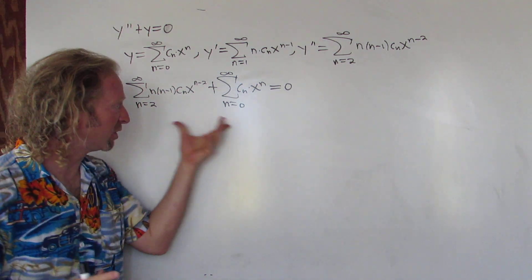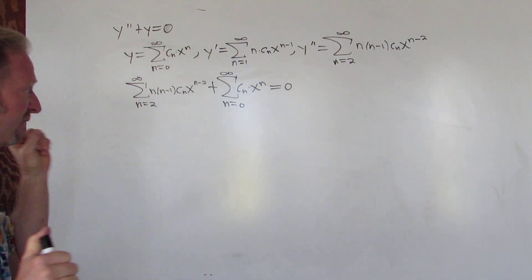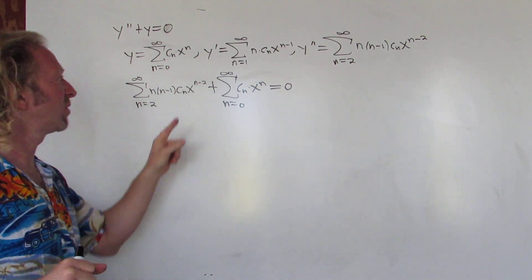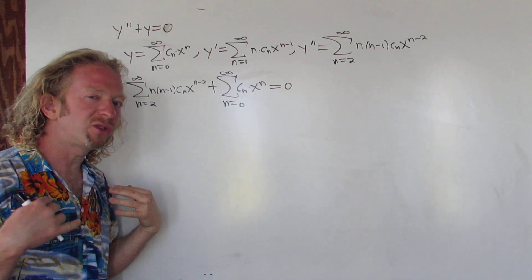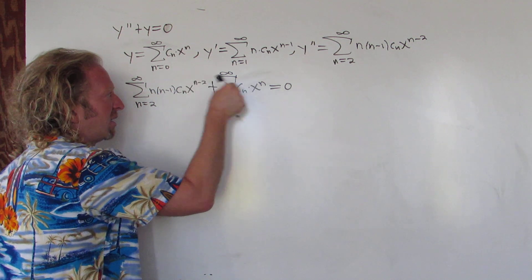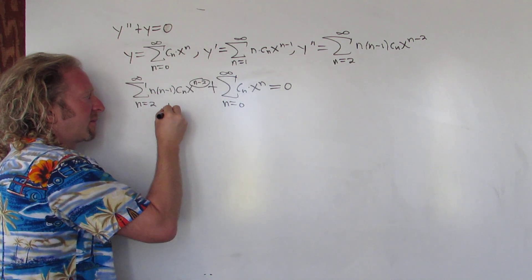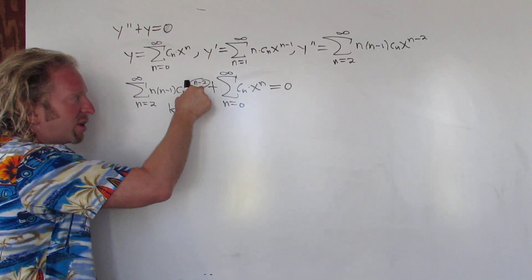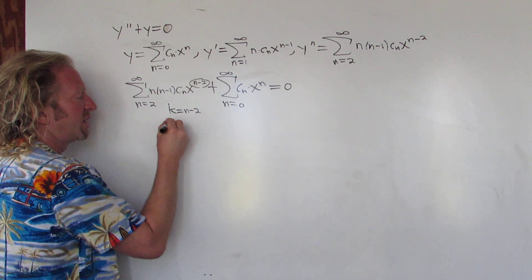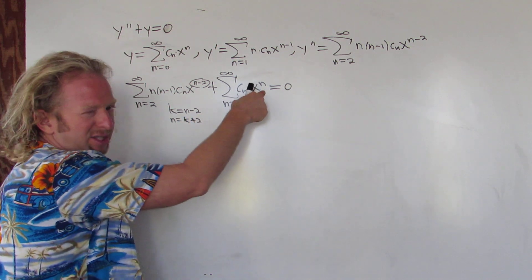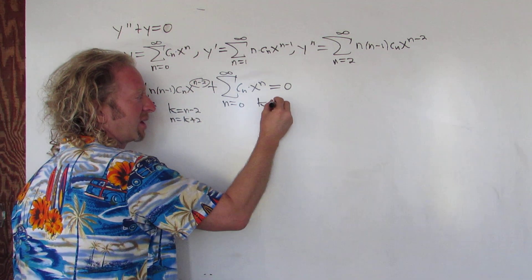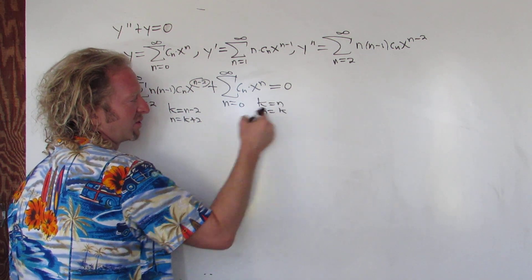The goal is to combine these, but you can't because these numbers are different and you want the exponents to be the same. So what I always do in this next step is make the exponent k — call it k and set it equal to n minus 2. Just take whatever is there and call it k. Then solve for n by adding 2, so you get n equals k plus 2. And for the second sum, k equals n so n equals k.